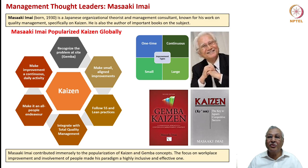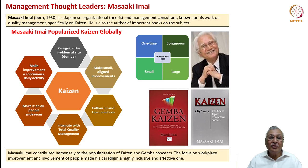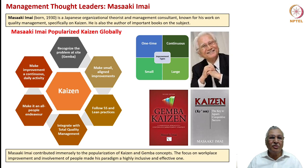Masaaki Imai brought the function of quality technology through the operations prism and gave a different perspective on how operational problems must be solved. He is a Japanese organizational theorist and management consultant known for his work on quality management, specifically Kaizen, which means continuous improvement. He proposed not merely continuous improvement sitting around tables, but continuous improvement by going to the shop floor — working where the problem actually exists. That is called Gemba; Gemba Kaizen is a concept popularized by him.